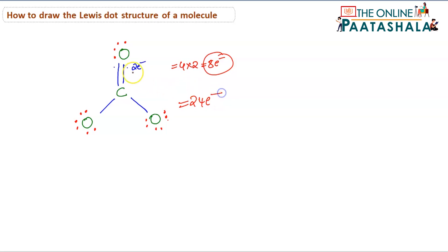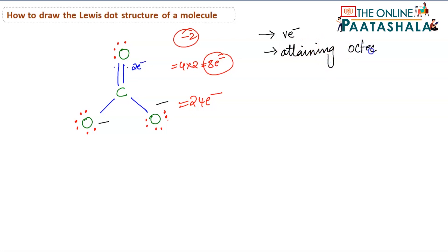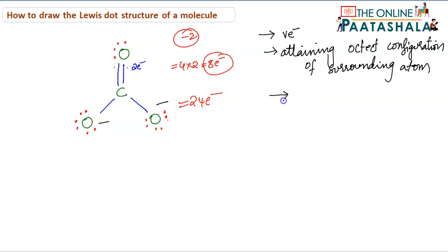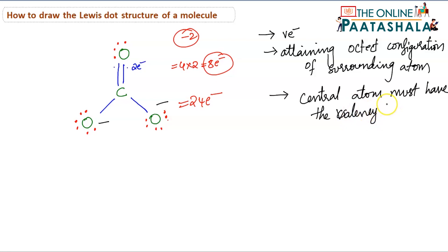The minus 2 charge will be written on the oxygens as negative charges. To summarize the key points: balance the electrons, ensure surrounding atoms attain octet configuration, and the central atom must have its valency satisfied — which also means it should attain octet configuration.